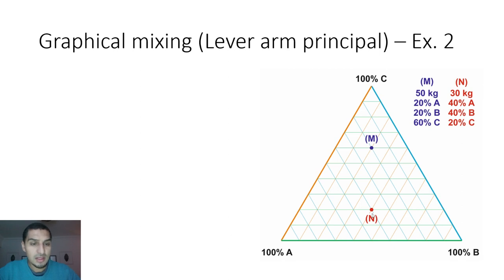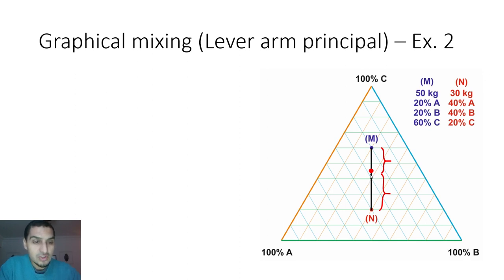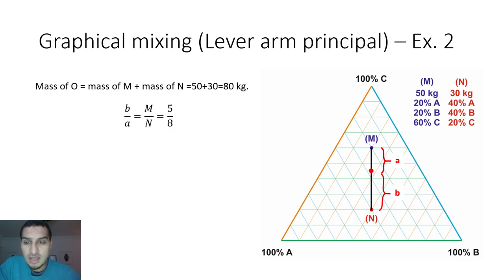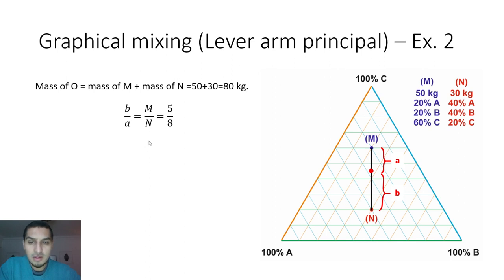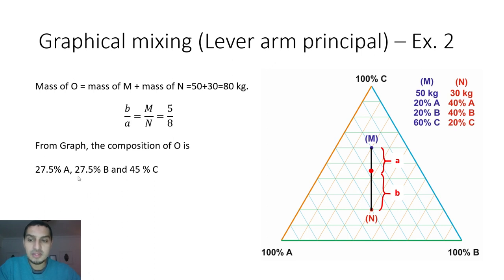As another exercise, mix M (50 kg) and N (30 kg) at their given locations on the graph. You know the output O is between M and N, and the total mass of O is 80 kg. Splitting the line into A and B, B/A = M/N = 50/30 = 5/3. From this, the composition of O is 27.5% A, 27.5% B, and 45% C, as read from the point on the graph.